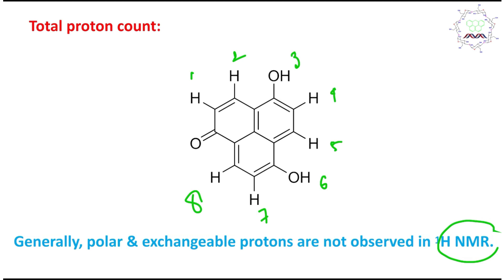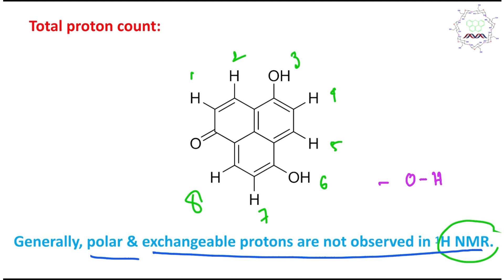However, these eight types of protons are not all observed. Generally, polar and exchangeable protons are not observed in NMR. In this case, you can see that the O–H bond is polar and exchangeable because oxygen is significantly electronegative. Such protons can jump from one molecule to another, so in the majority of cases these OH protons are not observed in NMR.